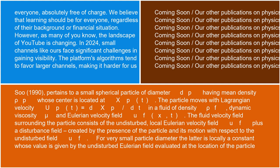The disturbance field is created by the presence of the particle and its motion with respect to the undisturbed field u_f. For very small particle diameter, the latter is locally a constant whose value is given by the undisturbed Eulerian field evaluated at the location of the particle center.